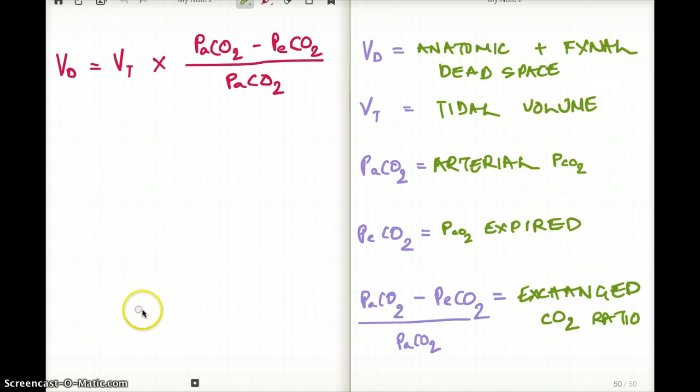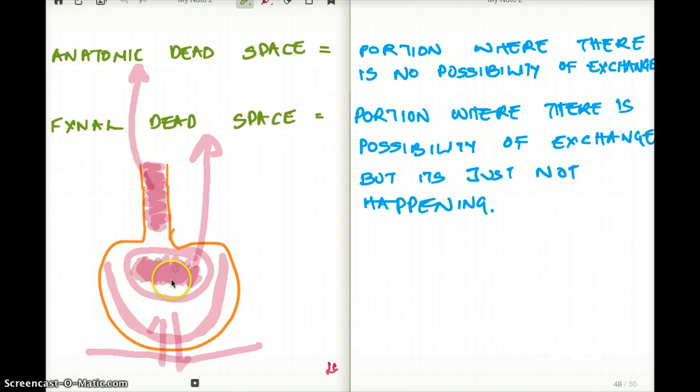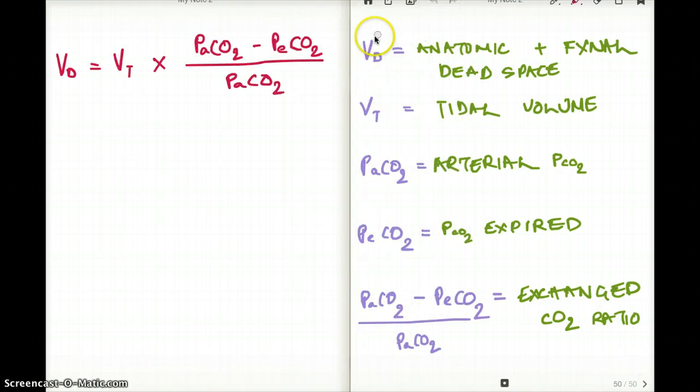Functional dead space is the air that is trapped in the lungs which has the potential for exchange, but it's just not happening, because there's not enough blood flow or maybe there's some problem with the lungs. VD, which is the physiologic dead space, is a combination of anatomic plus functional dead space. So that's how we are going to calculate VD. But how do we really calculate dead space? First of all, let me go through the different variables.